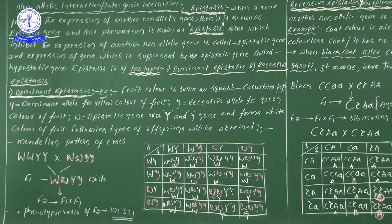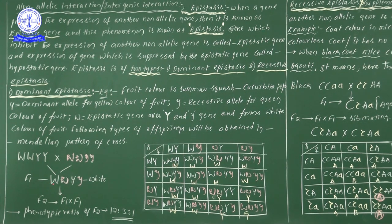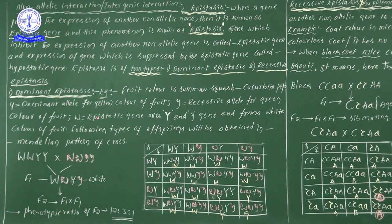From these parents, gametes are produced and in F1 generation we get capital W small w with capital Y small y. Because of the presence of capital W, all non-allelic genes will be under the control of capital W, so only capital W's character — white — is expressed in F1.